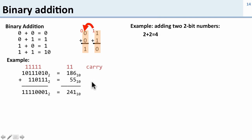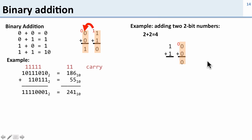Let's take a look at another example of adding two 2-bit numbers. We're going to do 2 plus 2, and we hope we get 4. So here's our math: 2 (binary 10) plus 2 (binary 10). So 0 plus 0 is 0, we have no carry. 1 plus 1 gives us 0 and a carry out.